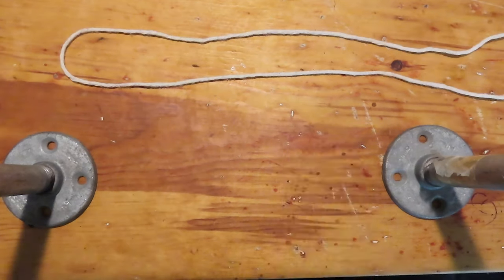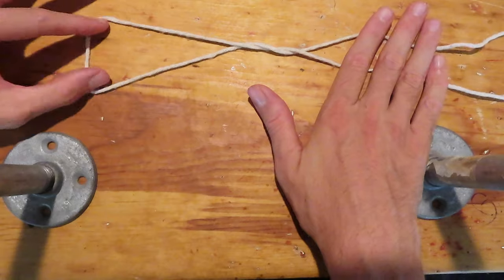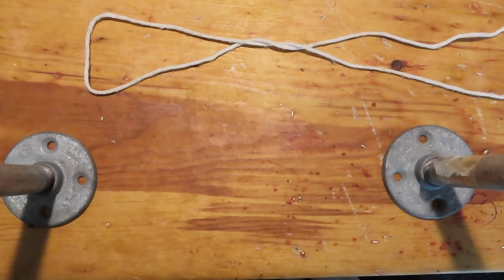We start like we would with a twist knot. Twist once, twice, and thrice, like the 5-2 knot.